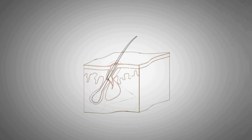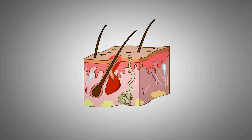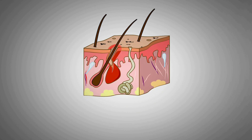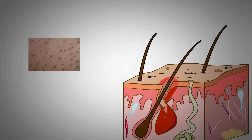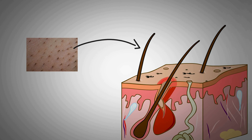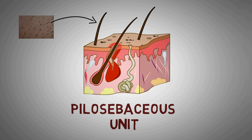To understand acne in the first place, you will have to understand a structure in your skin known as the pilosebaceous unit. Look at all the small hair shafts on your face — these hair shafts correspond to this structure in the illustration. Here you can see a cut section of the skin showing the pilosebaceous unit.